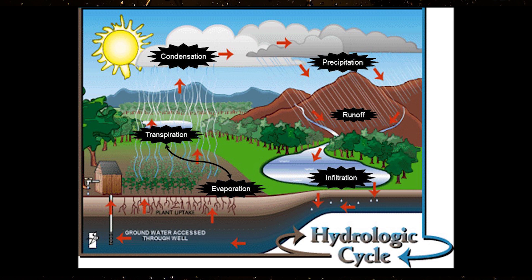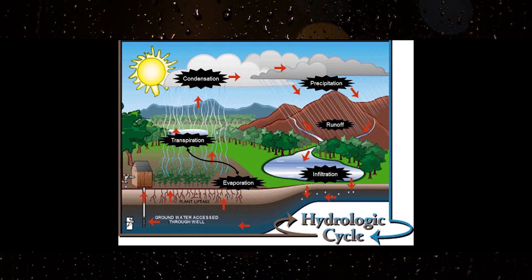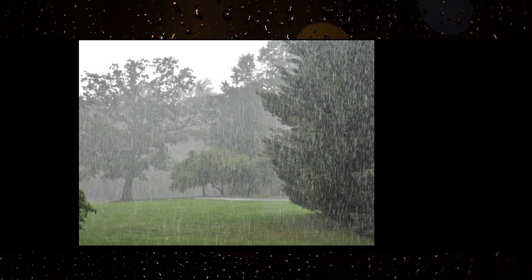Many processes work together to keep Earth's water moving in a cycle. There are five processes at work in the hydrologic cycle: condensation, precipitation, infiltration, runoff, and evapotranspiration. These occur simultaneously and, except for precipitation, continuously. Stormwater and runoff are part of this natural hydrologic process.